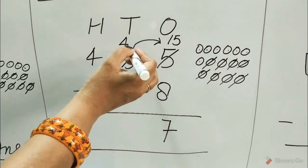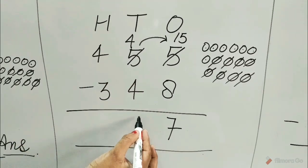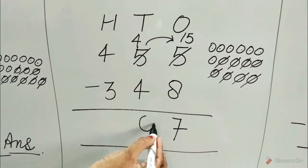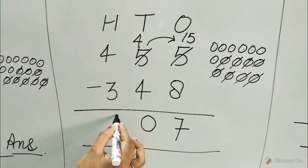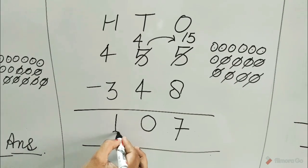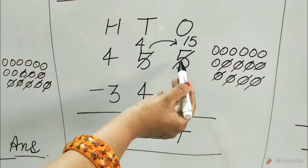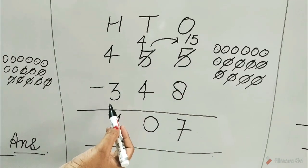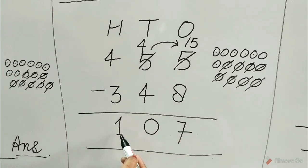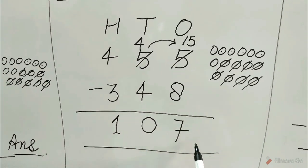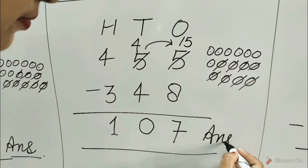Subtract the tens column. 4 minus 4 is equal to 0. 4 minus 3 is equal to 1. Hence, 455 minus 348 is equal to 107. Write answer.